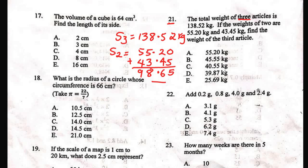What are we looking for? Find the weight of the third article. We are looking for the value of 1. Remember, there are 3 articles. We have the sum of 3 and we have the sum of the 2. To get the value of the third article, we just subtract the sum of 2 from the sum of 3.